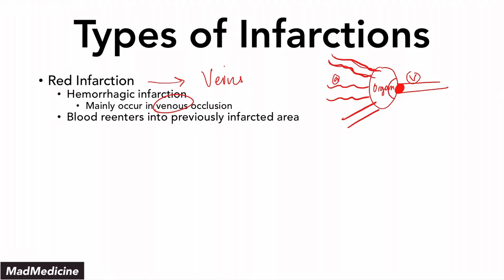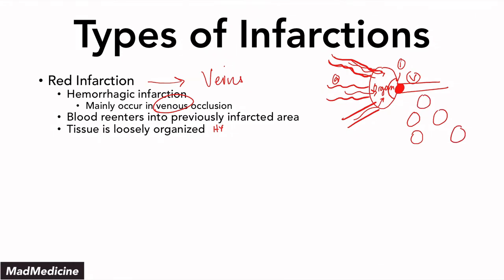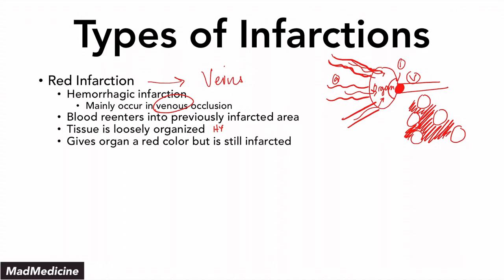Let's say this area in an organ is infarcted — this is the infarct area. You still have blood continuously entering the organ, and that's going to give it the hallmark red appearance. Another thing to remember is that these types of infarctions usually occur in organs that have loosely organized tissue. Because your tissue is loosely organized, the area in between the cells can also get filled up with blood, and that's going to give it another hallmark appearance of a red infarction. The organ is still going to be infarcted even though you're going to see a red color — this is kind of a false presentation. Even though you see the red color in an organ, don't think that organ is being perfused normally — it's still infarcted.